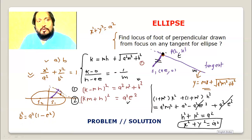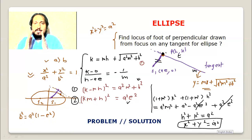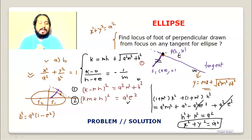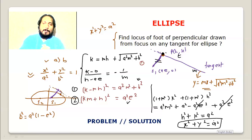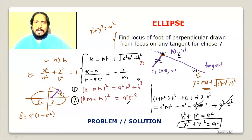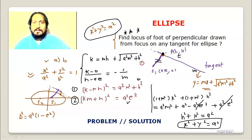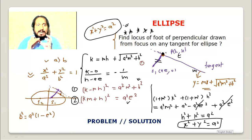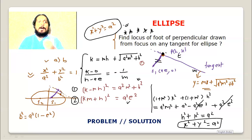The locus of the foot of perpendicular drawn from the focus on any tangent for the ellipse x squared upon a squared plus y squared upon b squared equals 1 (with a greater than b) is x squared plus y squared equals a squared. This is one of the important properties of the ellipse — mark it with a star and remember it.